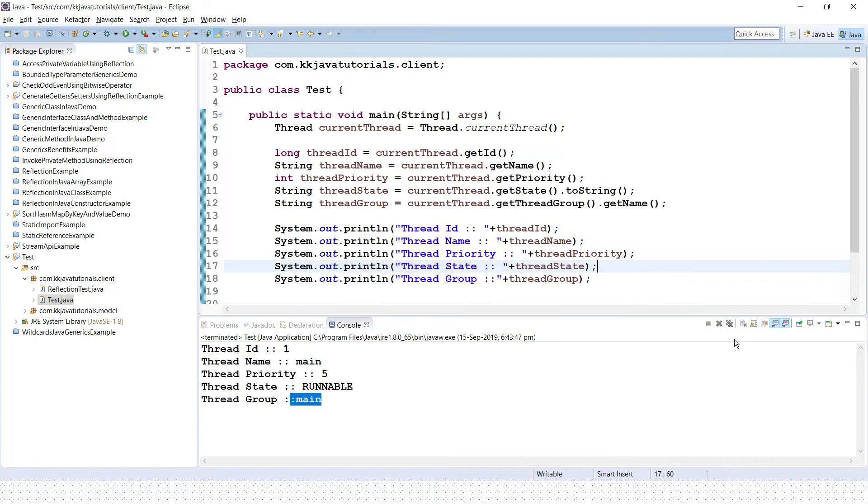If you run this application, then you'll get output something like this. You can see the thread ID as a long number, then thread name is main thread. Thread priority by default is five but you can change it using the setPriority method. We have the state, so currently printing as runnable state.